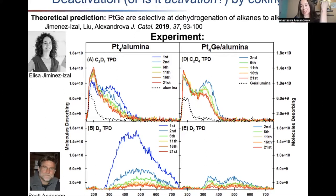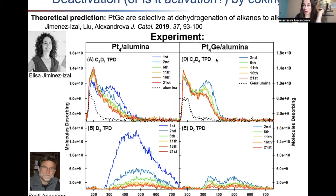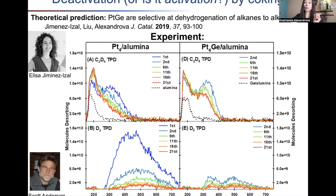Scott Anderson — I value this collaborator beyond words — so many times he followed our predictions and showed them to be true. He deposited platinum clusters on alumina and through an ALD-like process germaniated them. Here we have the familiar TPD experiment for ethylene desorption and D2 desorption from deuterated ethylene on Pt4 versus Pt4Ge. This is several cycles of TPD — cycling temperature. For platinum clusters, they dehydrogenate all the ethylenes to carbon, so all platinum sites get coked and poisoned, and dehydrogenation activity goes down — essentially the catalyst kills itself.